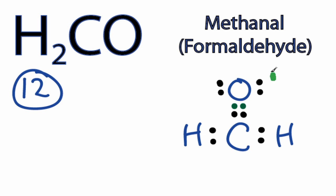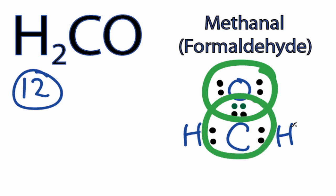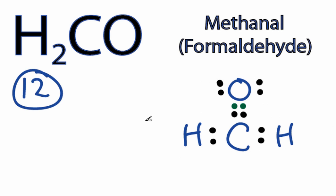Now the oxygen has 8 valence electrons, and the carbon has 8. The hydrogens only need 2 for a full outer shell, so they're okay. So in our Lewis structure for H2CO, we've completed the octets for each of the atoms, and we've used only 12 valence electrons.